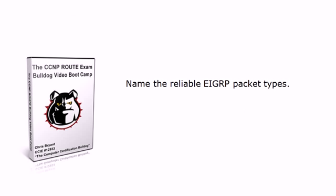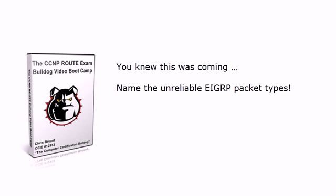First off for EIGRP, we need to know the reliable and unreliable packet types. What are they without looking at the list? Name the reliable EIGRP packet types. And of course, name the unreliable EIGRP packet types. Unreliable doesn't necessarily mean bad — just like the TCP vs. UDP distinction you learned about in your CCNA studies.